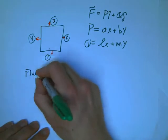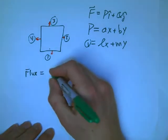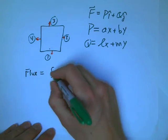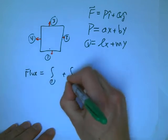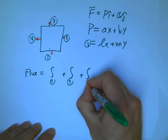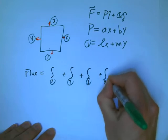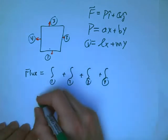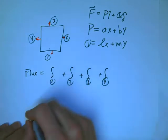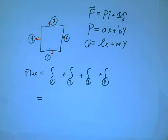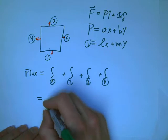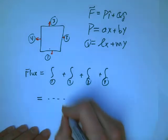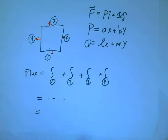And on each region, we want the flux, the outward flux of that thing. And so, the flux is the integral over one plus the integral over two plus the integral over three plus the integral over four.